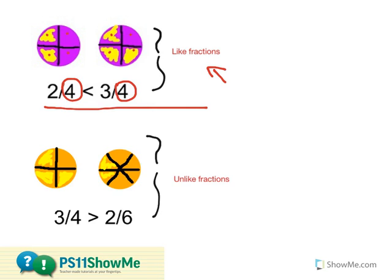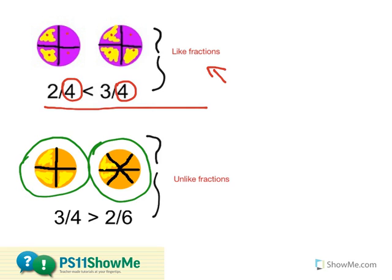When I create a visual representation of two unlike fractions, my whole is going to be the same size. You can notice that this whole is the exact same size as this whole, but the number of pieces in each of those wholes is going to be different.